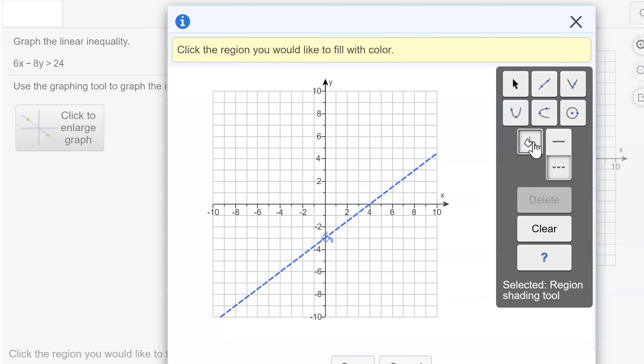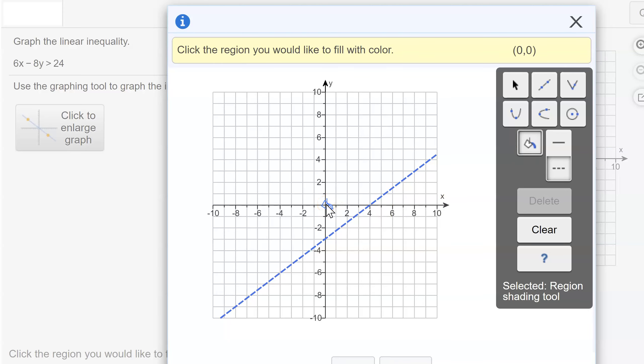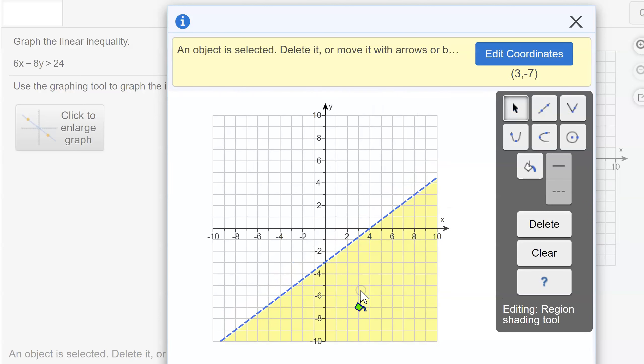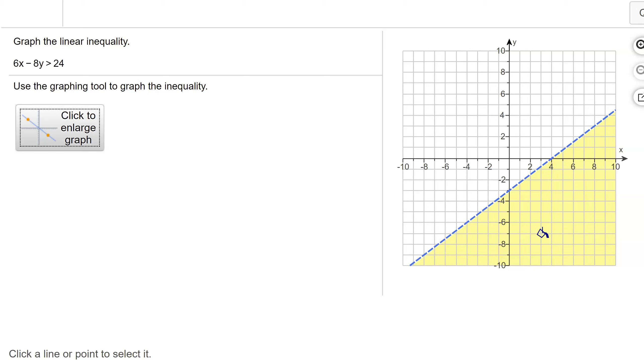So going back to my graph, I need to shade a region. You use this bucket, which is the shading tool. I do not want the region containing (0, 0), so I want the region that is below the graph. Now I am done. I hit save and check my answer.